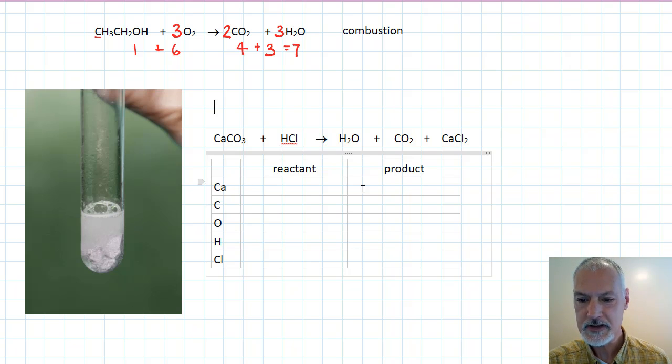I'm going to take a point now and just balance this, and then we'll introduce the states. So first off, calcium, there's one on this side, and there's one on this side. Next substance I'll take a look at is carbon, one on this side and one on this side. Our oxygens at this point, we have three of them on this side, one there, two there, three on this side.